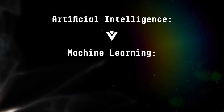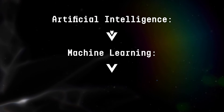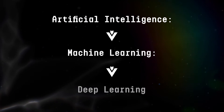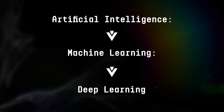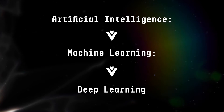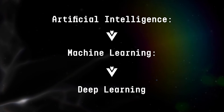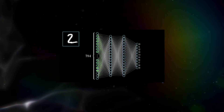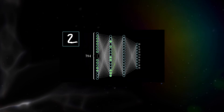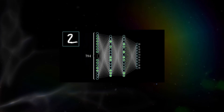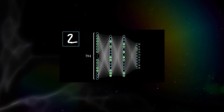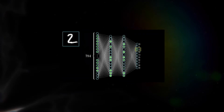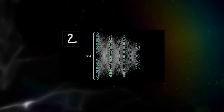Deep learning is a subset of ML. It's inspired by the structure of the human brain, using algorithms called neural networks. These networks have many layers — hence 'deep.' Each layer transforms the data, helping the machine recognize complex patterns.